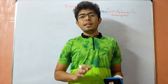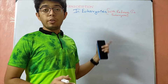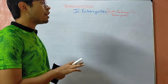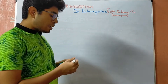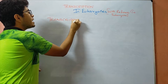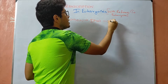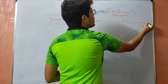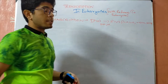Today our topic of discussion is transcription in eukaryotes with reference to the prokaryotic system. We are going to focus on the eukaryotic system and see the differences with the prokaryotic system. Transcription is the process by which the DNA molecule is transcribed or transformed into an RNA molecule — be it mRNA, rRNA, or tRNA — with the help of the enzyme RNA polymerase.